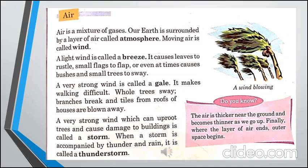ہم سب کو یہ بات پتا ہے کہ air جو ہے وہ mixture of gases ہے جس میں oxygen، carbon dioxide، nitrogen اور different types کی gases شامل ہیں۔ ہماری air کو ایک layer of air نے چاروں طرف سے cover کیا ہوا ہے جس کو ہم atmosphere کہتے ہیں۔ اس atmosphere میں چلنے والی ہواؤں کو wind کہا جاتا ہے۔